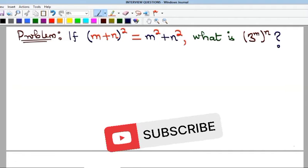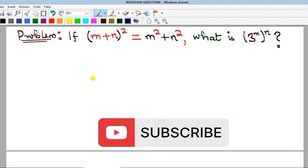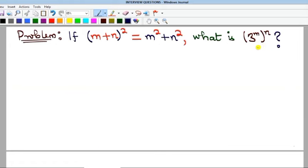So this problem says that we should find the value of 3 raised to the power of m raised to the power of n if this particular equation holds. That means, let's take it that what we have here is (m+n)² = m²+n², so that we should find this.